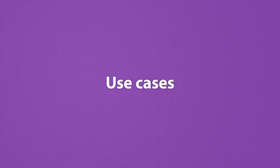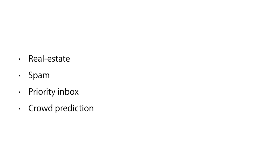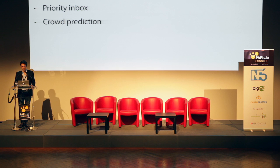Let's go over a few use cases. There's real estate, spam, priority inbox — a feature of Gmail that predicts whether an email is important — and crowd prediction: predicting how many people are going to turn up at a certain location. I think I'm quite good at that myself — we ordered catering for 175 people and we are exactly 175. So that's crowd prediction in action.